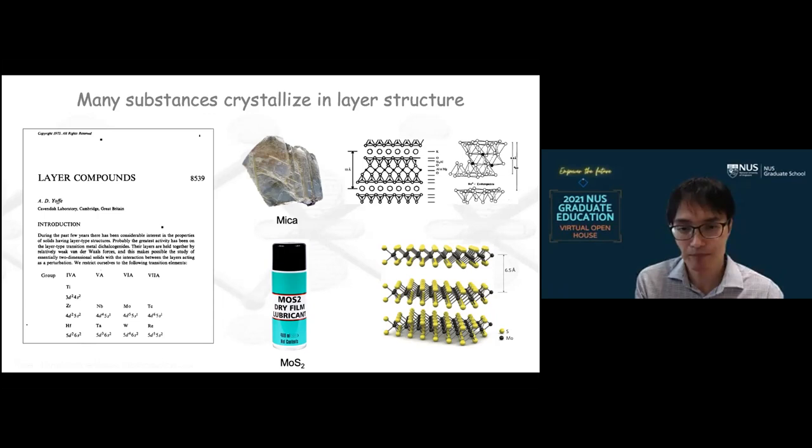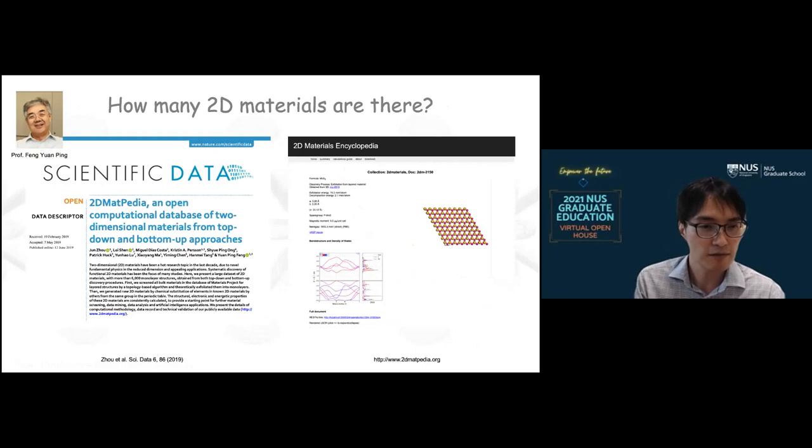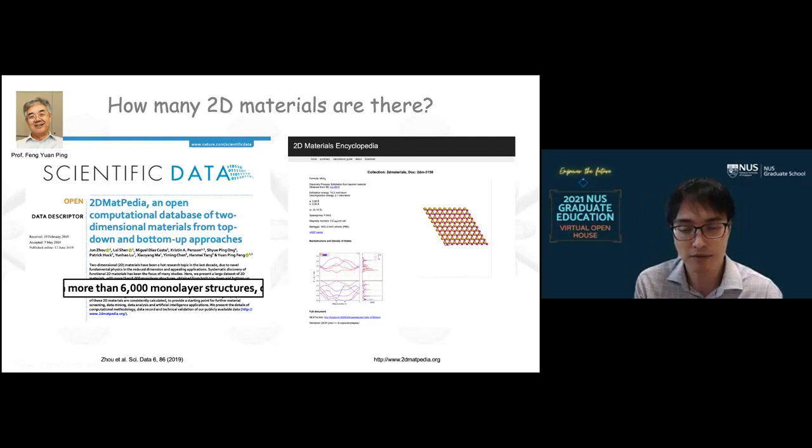And in fact, with the rise of the machine learning driven materials discovery, our colleague at NUS, a theorist at NUS in physics, developed a machine learning algorithm to discover two-dimensional materials. And it turns out that there are a huge number of two-dimensional materials that are predicted to be stable. And as of now, the prediction says there are more than 6,000 two-dimensional or monolayer compounds.